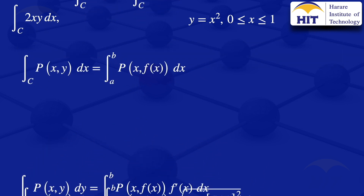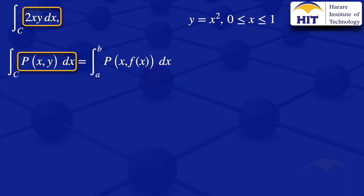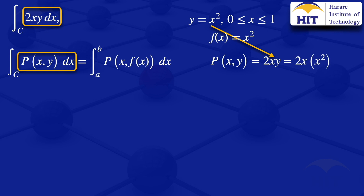Starting with the first one: the integral of 2xy with respect to x along the curve C. Comparing with the formula, we see that p of xy equals 2xy. For our curve, y equals x squared, so f of x equals x squared. Substituting, p of x, f of x becomes 2x multiplied by x squared, which simplifies to 2x cubed.